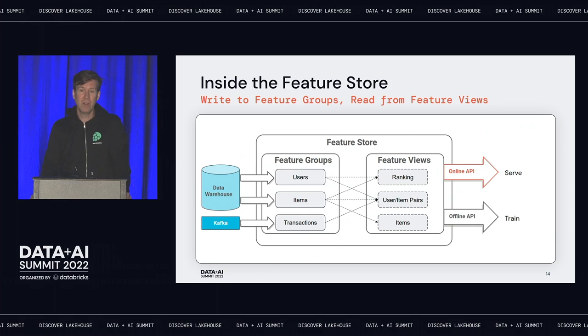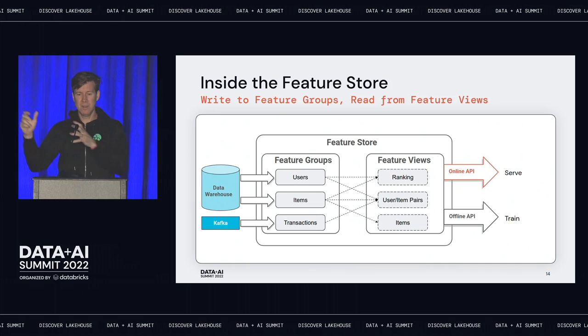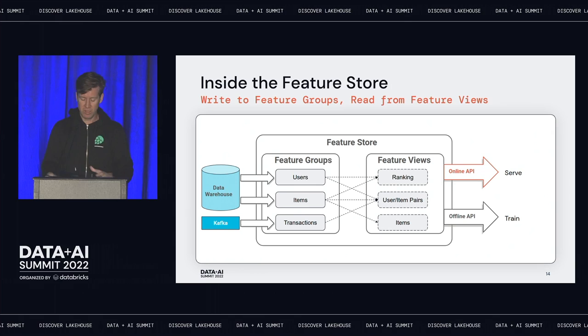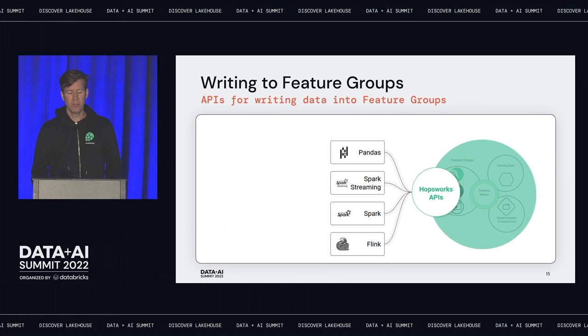With the H&M dataset example, we have three different datasets: users buying items at H&M, the items of clothing available, and the transactions linking users to items. These may come from different systems — a data warehouse, Kafka for transactions. We write them into feature groups, which are just tables of features. To create training data we use an offline API — we select features from the feature groups, define a feature view (ranking view or retrieval view), then retrieve training data. When serving models, we use the online API to get back feature vectors with pre-computed features at very low latency.